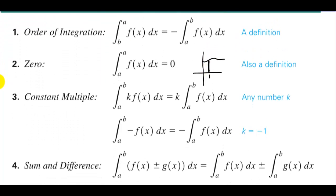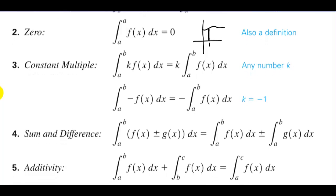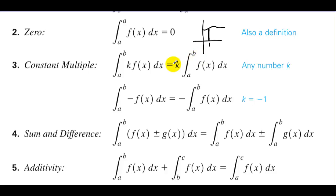Number three: constant multiple. Integrating from A to B times K — integrating from A to B of K times f(x) is the same as K times the integral from A to B. You can pull constants out of integration.